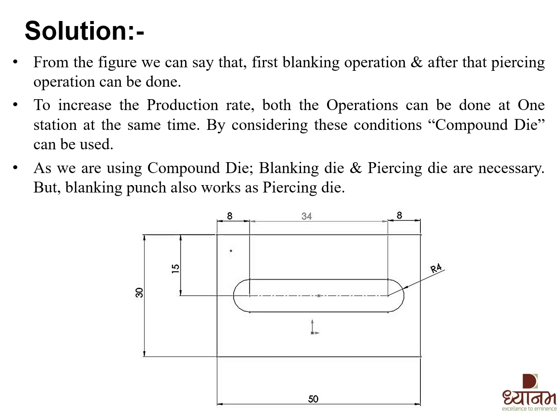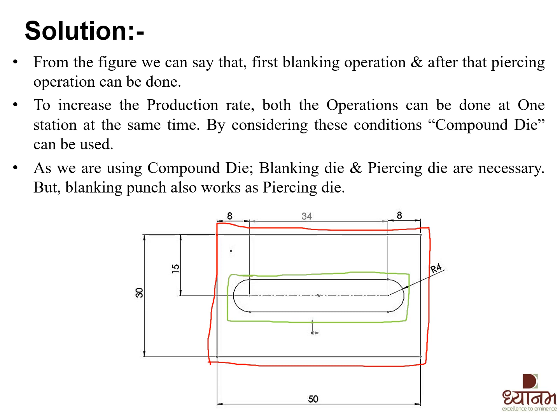As we are using a compound die, both blanking die and piercing die are necessary. The blanking punch also works as piercing die. On the outer edges of the given component we are going to perform the blanking operation, whereas on the inner side of the component we are going to perform the piercing operation.